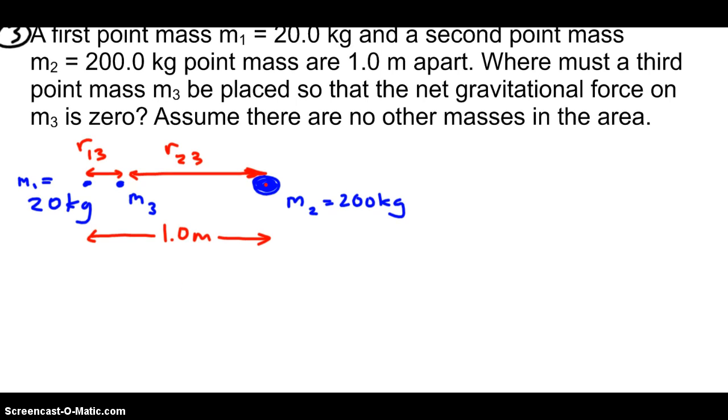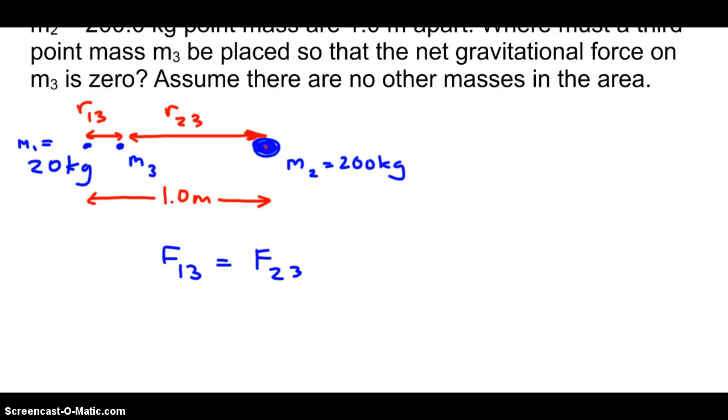We place m3 so that the force, so that 1's pull is equal to 2's pull, to mass 2's pull. The force is balanced, putting it in equilibrium. The net gravitational force is 0. On the left side we replace using Newton's law of gravitation, and we do the same on the right side.